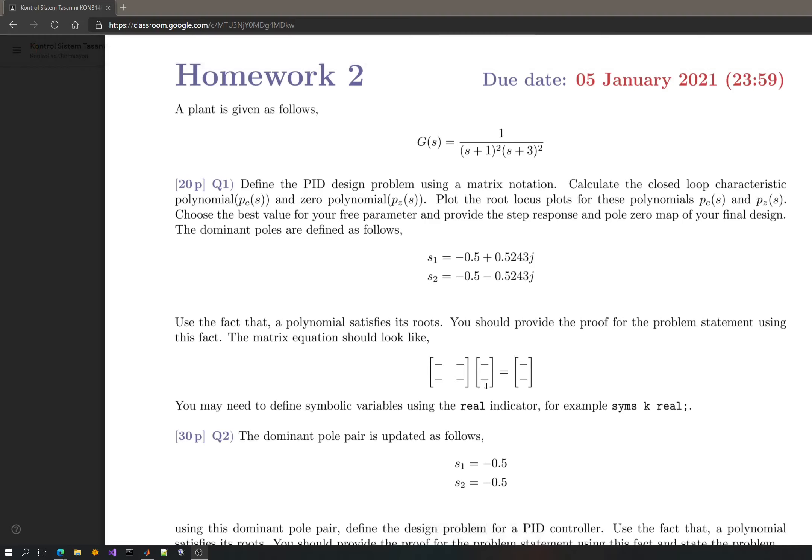Once you have defined this matrix equation, you will solve for these two parameters by taking the inverse of this matrix and then acquire the solution. Use MATLAB for that. Then you will calculate the closed loop characteristic polynomial, which is called PCS. You have to control the system in a closed loop, get the characteristic polynomial, and define it using these parameters.